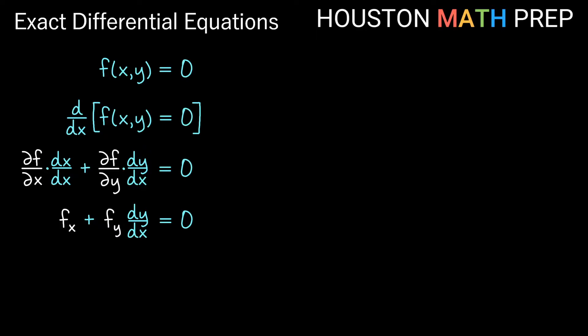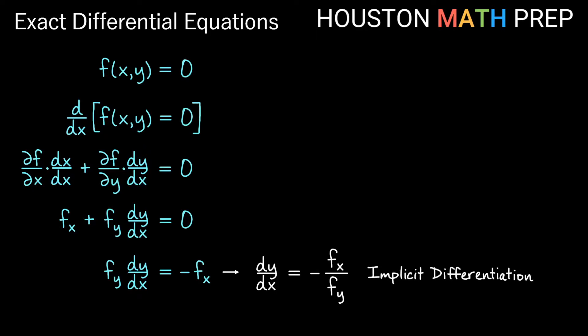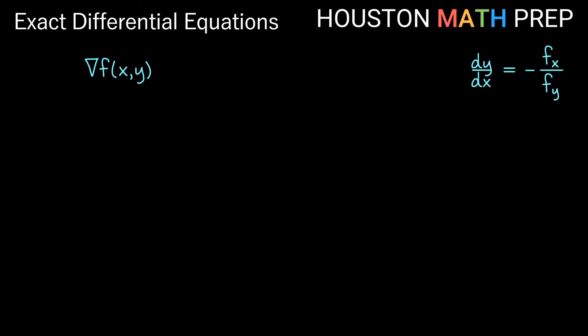One shortcut we might develop at this point is to move the partial fx to the other side and divide by partial fy, giving us the nice shortcut dy/dx equals negative partial fx over partial fy. This is actually a shortcut for implicit differentiation. So let's set our implicit differentiation shortcut to the side.